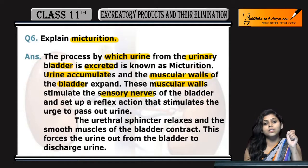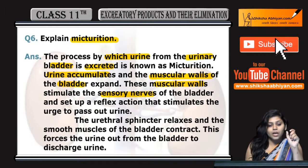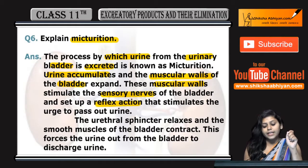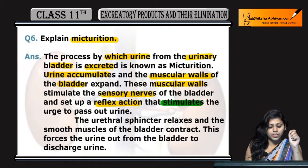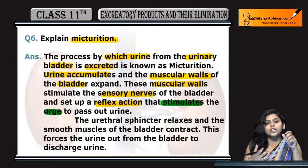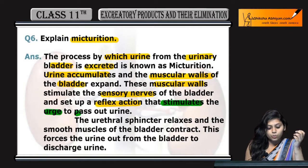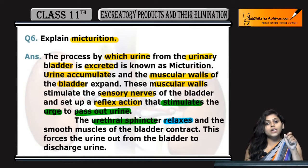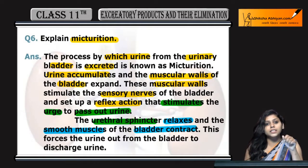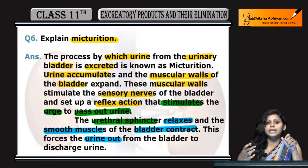Jo muscular walls hain urinary bladder ki, voh stimulate kerti hain sensory nerves ko of the bladder, and set up kerti hain ek reflex action. Us reflex action ki wajze se stimulation hoti hai, jiski wajze se urge hoti hai human beings ya kisi bhi organism ko to pass out the urine. Urethral sphincter jo hai voh relax hota hai, and smooth muscles jo hain bladder ki woh contract karthi hain jab urine ka passage hota hai out of the urinary bladder.